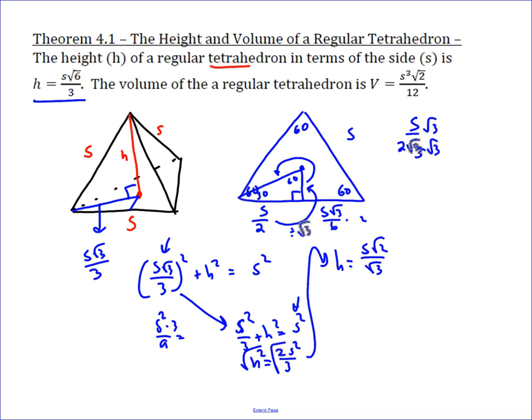I'm taking the square root of both sides. Now, we don't want the root 3 in the denominator, so we multiply the top and the bottom by that, and that gives us side root 6 all over 3 is the height of a regular tetrahedron.